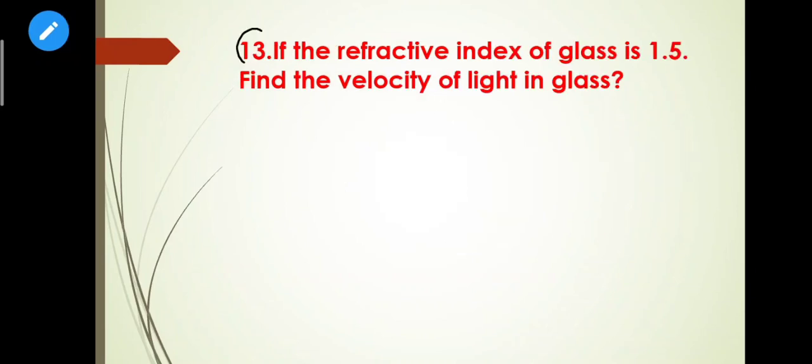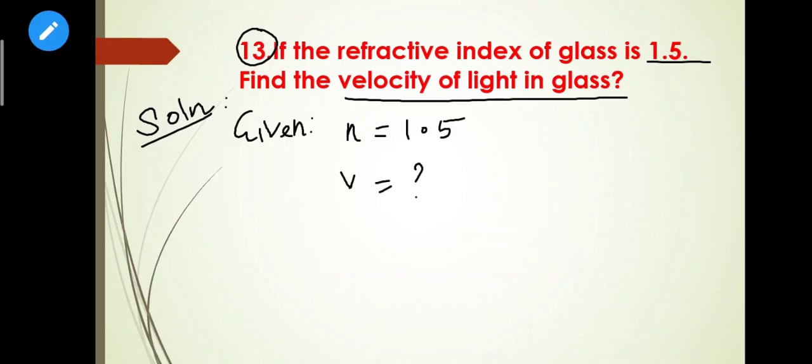Next problem: If the refractive index of glass is 1.5, find the velocity of light in glass. Solution - Given: refractive index of glass, n = 1.5. Find the velocity of light V. The relation for velocity of light: n = c/v.